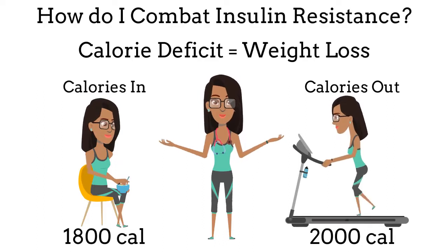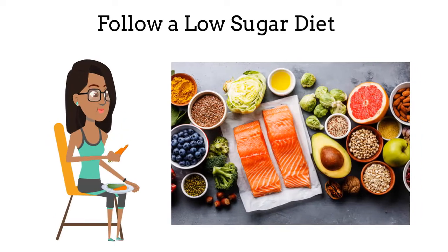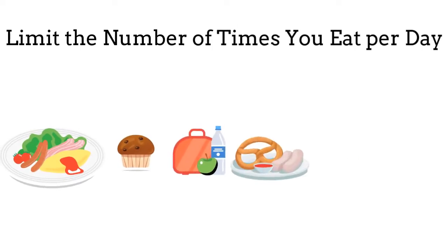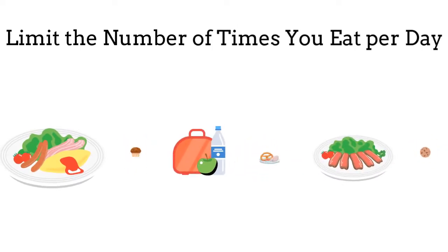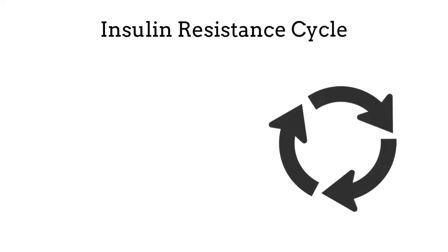Lose weight by creating a calorie deficit, meaning eat less than you burn. Wait, didn't you just say that insulin resistance makes you feel hungrier, so how am I supposed to eat less? Follow a low sugar diet to limit the amount of glucose released into your bloodstream and eat less often so there are fewer episodes of glucose released into your blood throughout the day. Insulin resistance can be a vicious cycle.